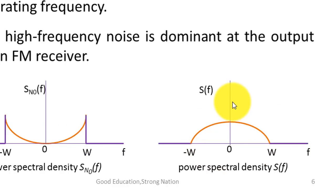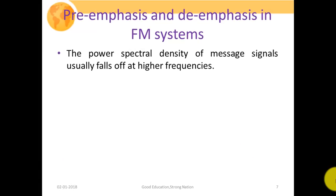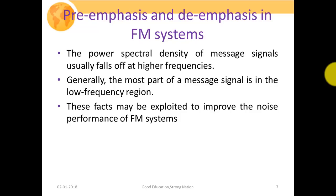On the other hand, if we closely observe our message signal, then the power spectral density of a message signal has just the opposite relationship. At lower values of frequencies, our message signal will have higher strength or higher power level, and as the frequency increases, the signal strength gets reduced. This particular figure shows the power spectral density of the message signal — it usually falls off at higher frequencies, with most of the message signal in the lower frequency regions. These two facts can be exploited in order to improve the noise performance of the FM system.